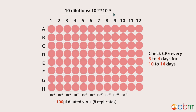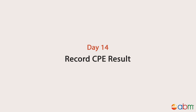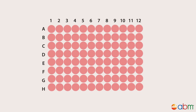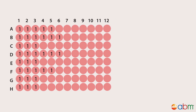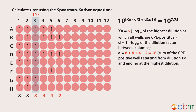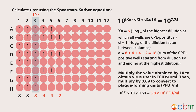Incubate the plate for 10–14 days and monitor cytopathic effects every 3–4 days. Columns infected with higher concentrations of virus should exhibit CPE by day 4. On day 14, record whether each well is CPE positive or CPE negative. Wells showing any signs of CPE are given a score of 1 and wells showing no CPE are scored at 0. Calculate titer using the Spearman-Kärber equation. Multiply the value obtained by 10 to obtain virus titer in TCID50 per ml, then multiply by 0.69 to convert to plaque forming units (PFU) per ml.